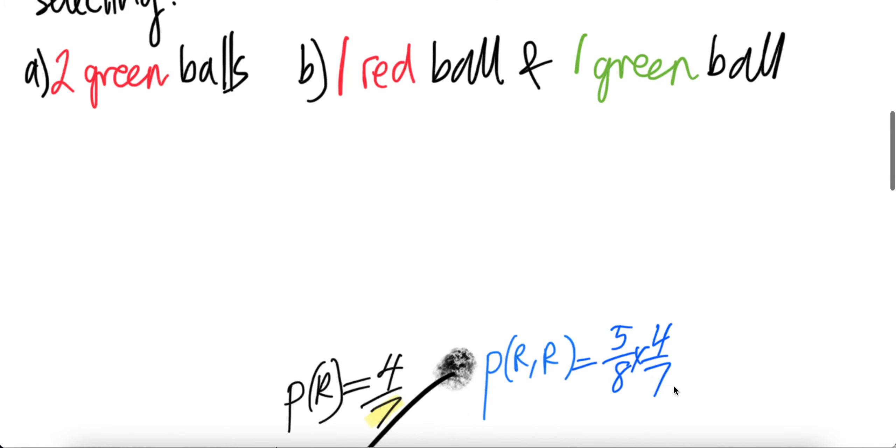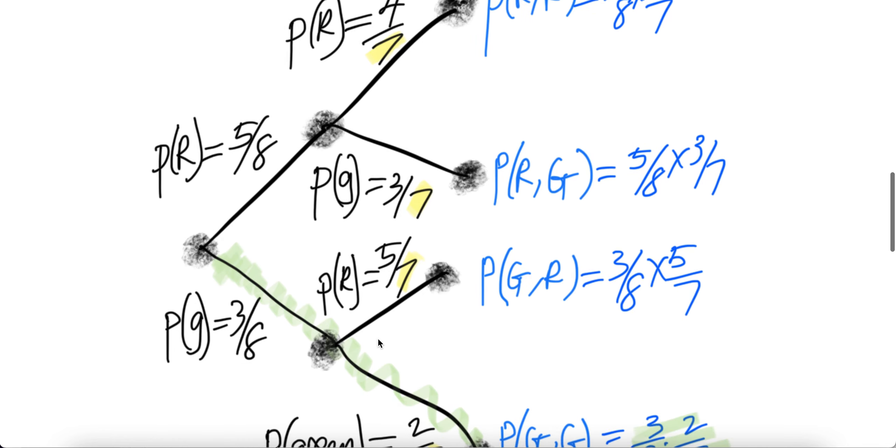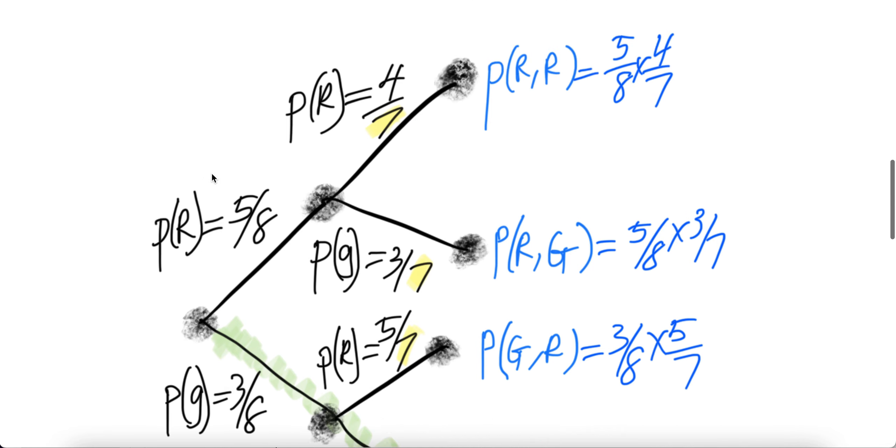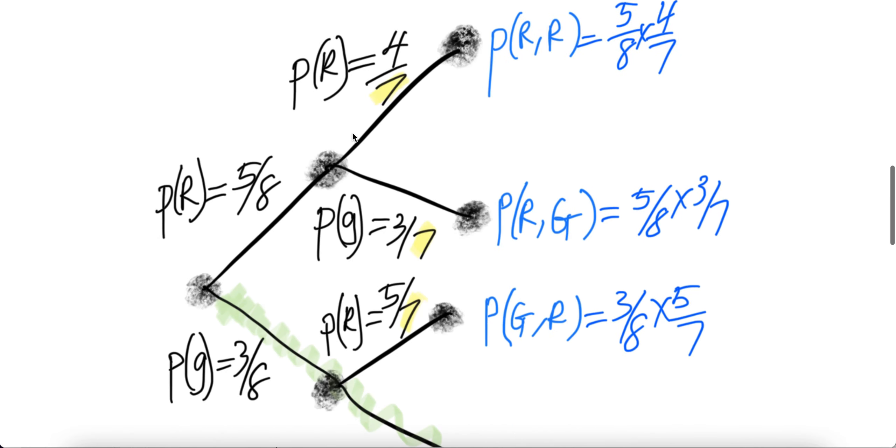Let us draw a tree diagram. Here, we're going to start with the starting position. Here's the red line here. To get the probability of getting a red ball, how many red are there? Five. Five red. And the total number of balls is eight. So the probability of getting a red ball is five over eight. Probability of getting a green ball, three green balls out of the eight balls.